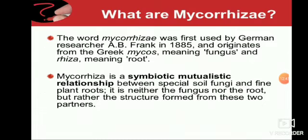Coming to Mycorrhizae, which is another symbiotic relationship of fungi. The word mycorrhizae was first used by German researcher A.B. Frank in 1885, originating from the Greek words 'mycos' meaning fungus and 'rhiza' meaning roots — so mycorrhizae means 'fungus root.' Mycorrhizae is a symbiotic mutualistic relationship between special soil fungi and fine plant roots; it is not a fungus or root but a structure formed from these two partners.